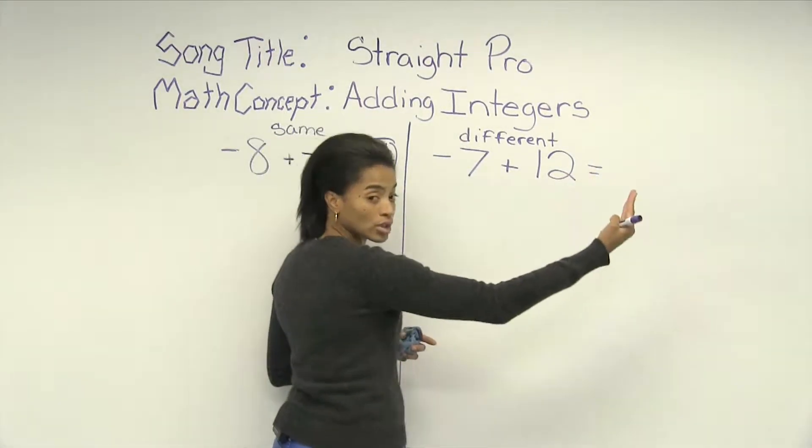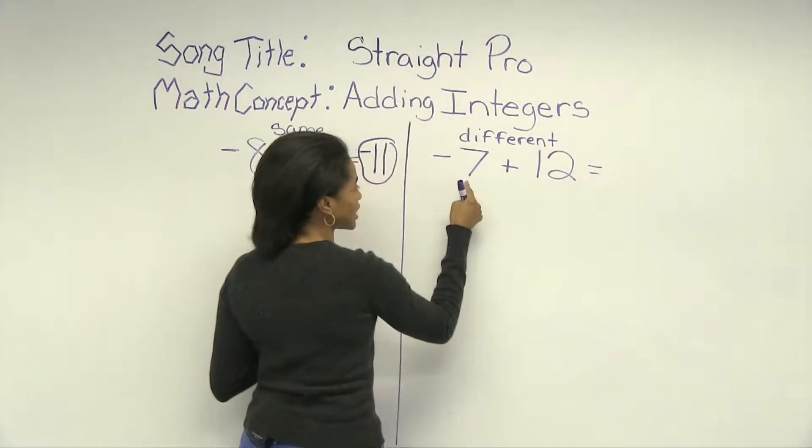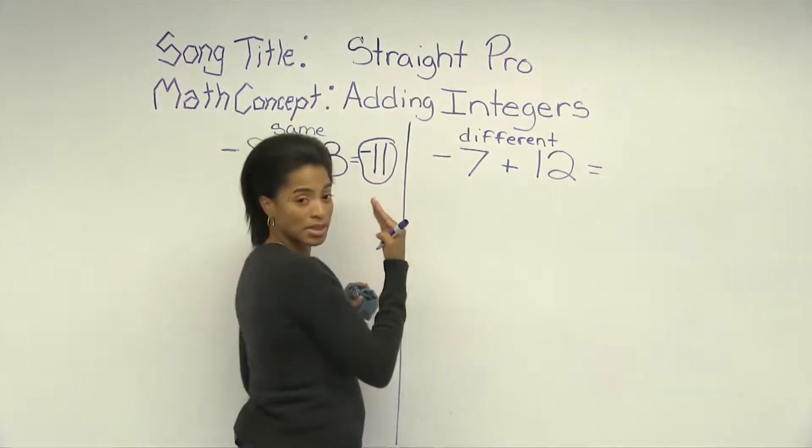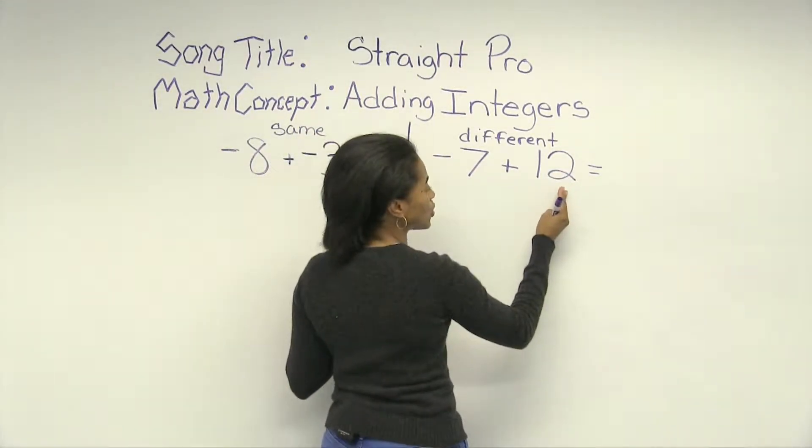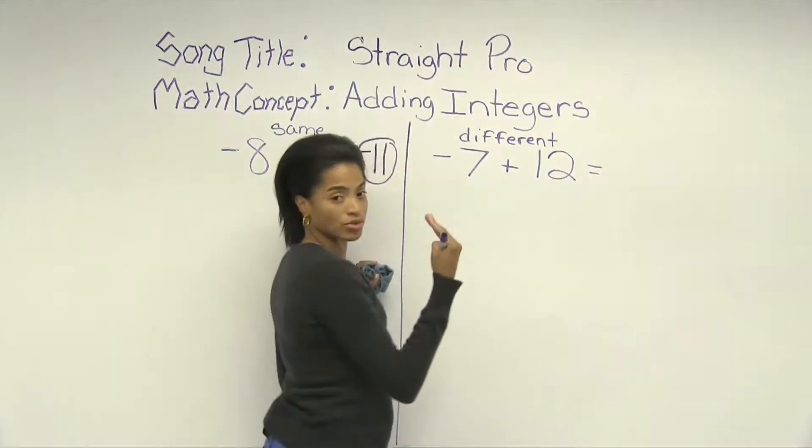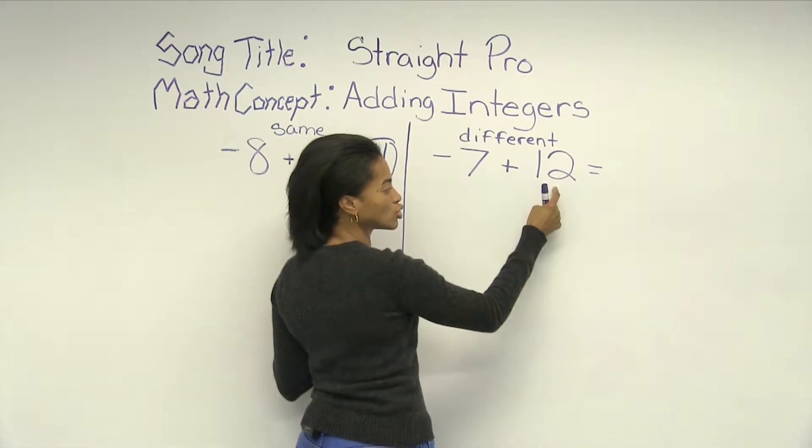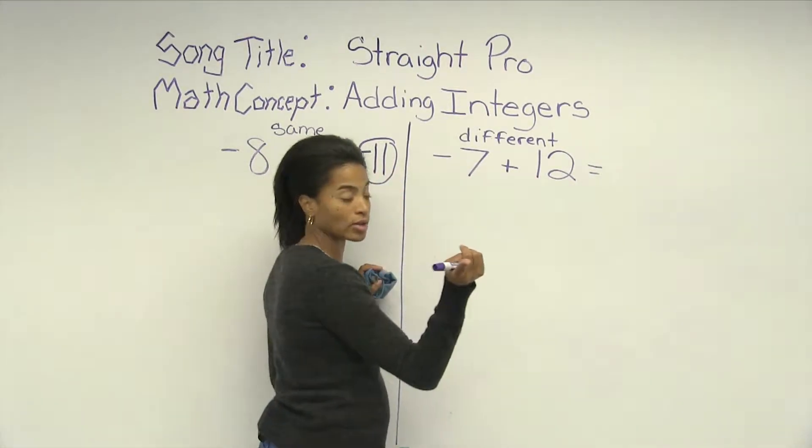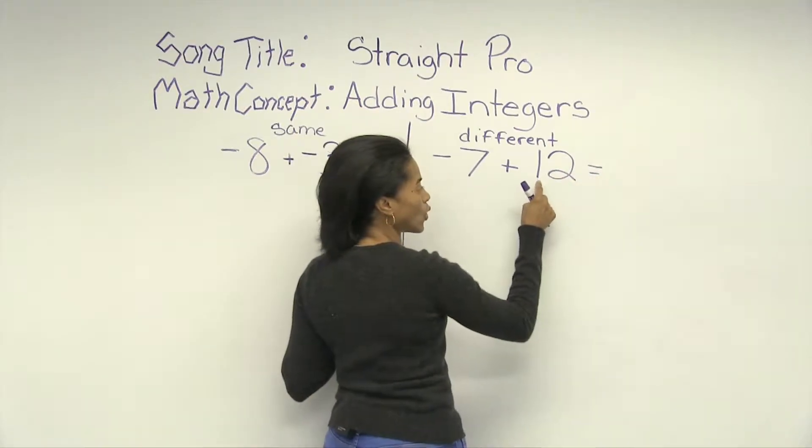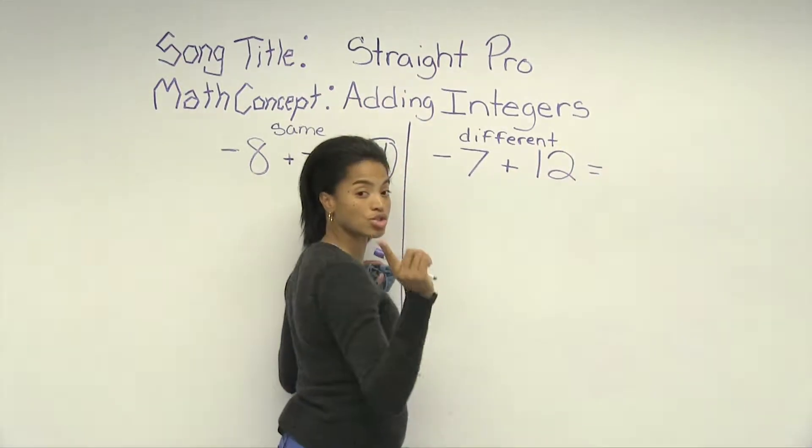The one that's furthest from zero. So in this case, negative seven is only seven spaces from zero, but positive 12 is 12 spaces from zero. So you want to take the sign of the one with the greatest absolute value. 12 has the greatest absolute value, which means our sum will have the same sign as 12.